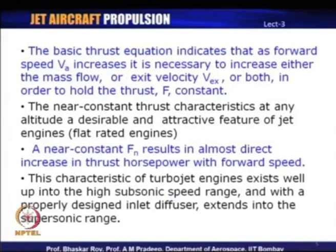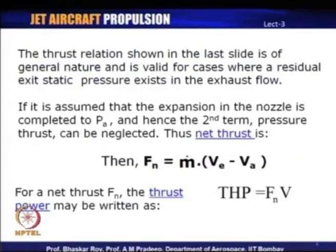The basic thrust equation indicates that as forward speed V_a increases, it is necessary to increase either the mass flow or the exit velocity V_e, or both, to hold thrust constant. If the aircraft starts flying at a higher velocity, the thrust will go down unless V_e increases or M-dot increases. So you must find ways to increase either V_e or M-dot to hold thrust, otherwise thrust starts going down.